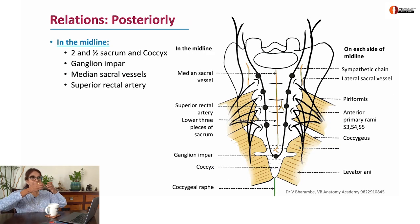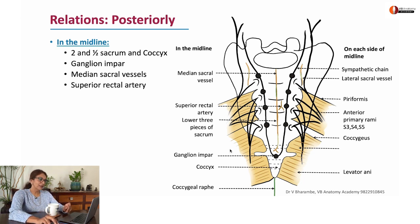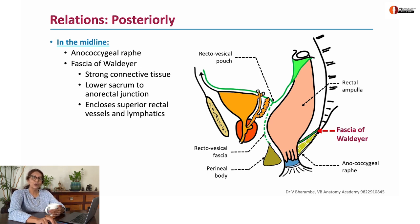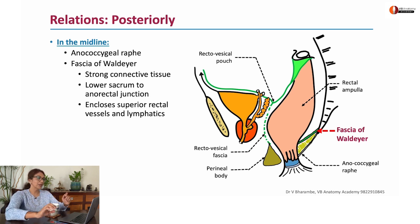Posteriorly the rectum is related to many midline structures and lateral structures. In the midline you will find the ganglion impar, the lower two-and-a-half vertebrae of sacrum, median sacral vessels, and the superior rectal artery. In the lower part you will find the fascia of Waldeyer and the anorectal junction. The fascia of Waldeyer is a dense connective tissue through which pass the superior rectal vessels, connecting the lower part of sacrum to the anorectal junction.